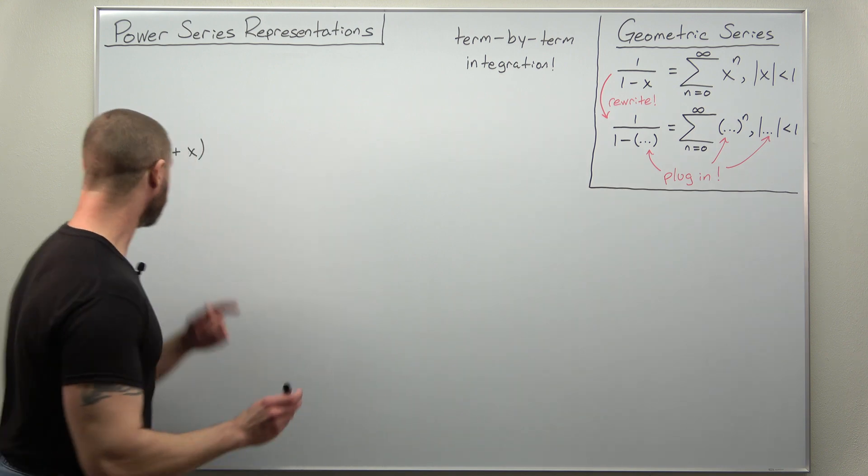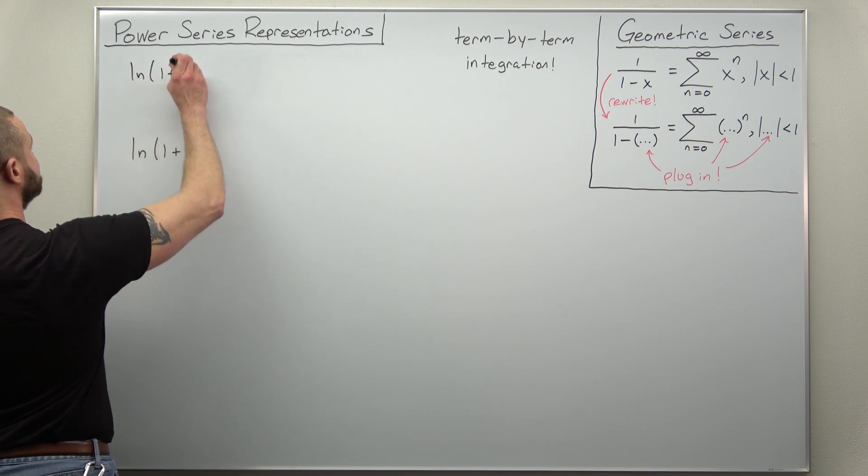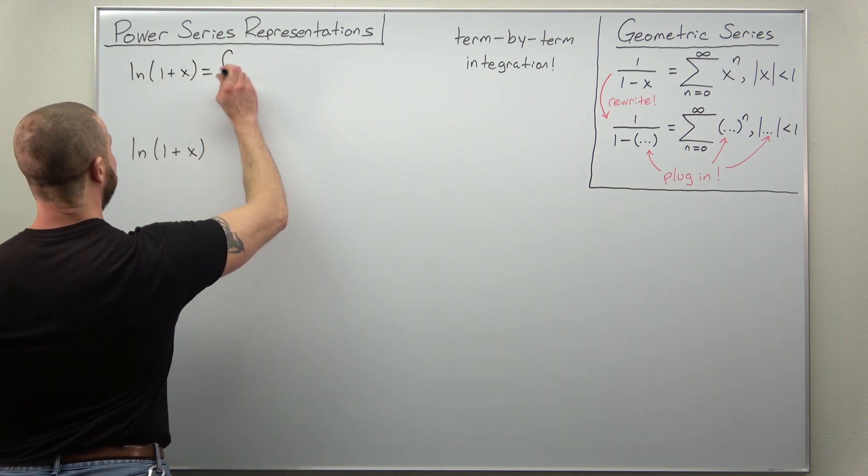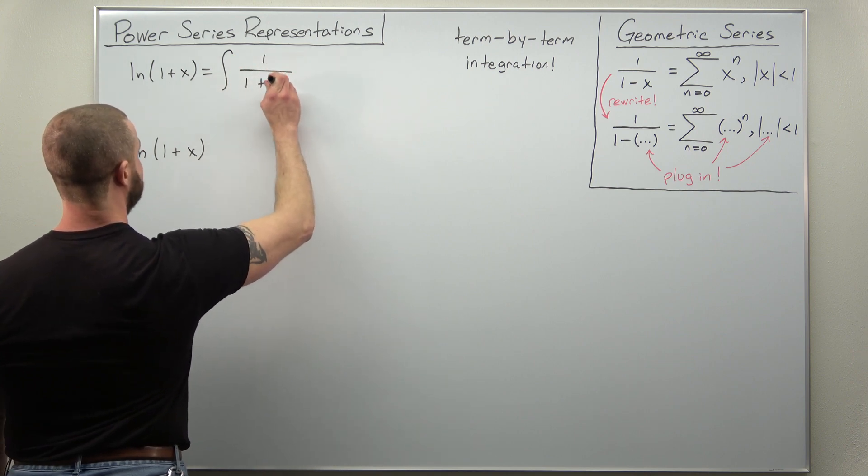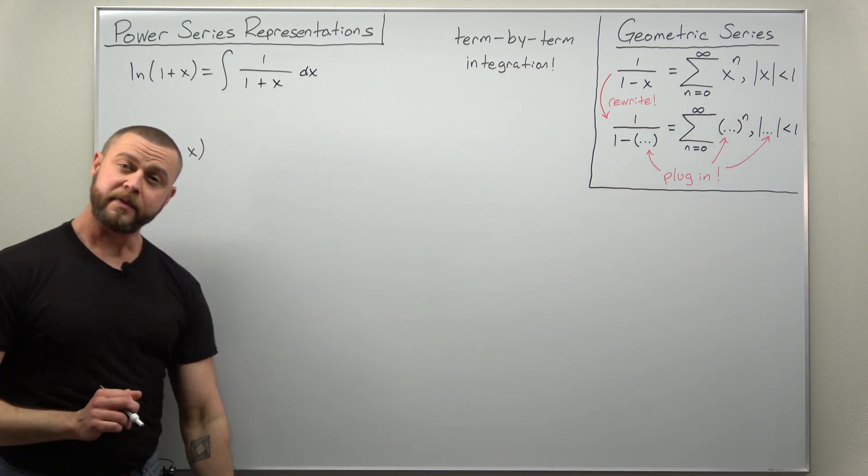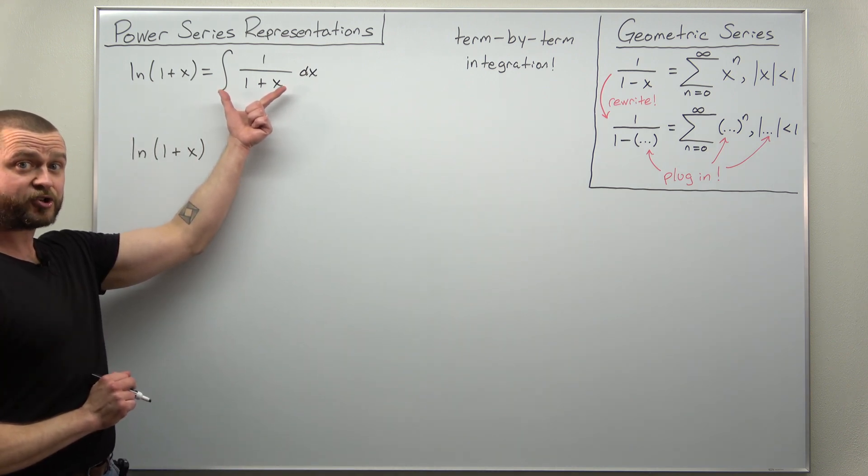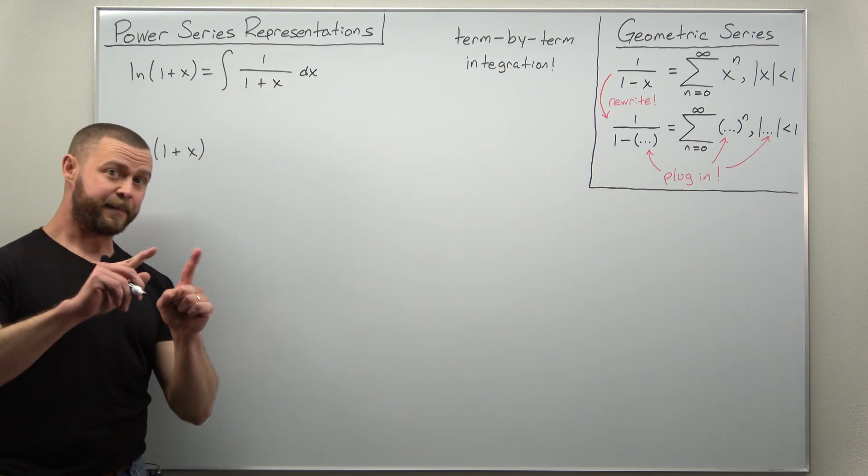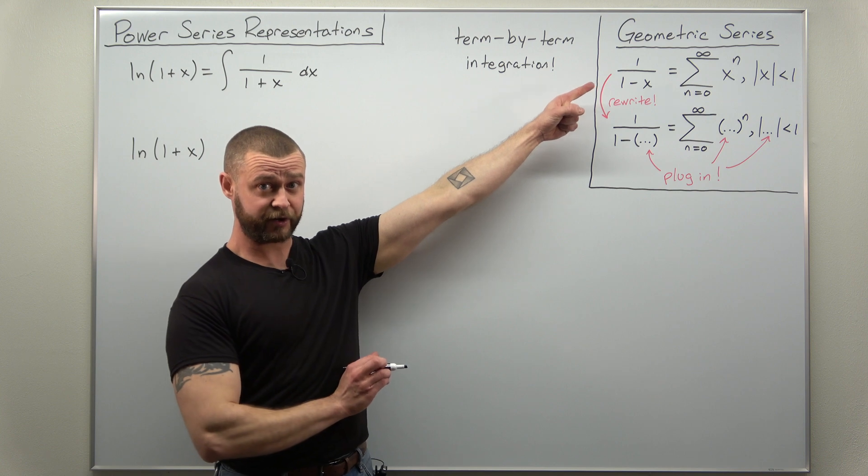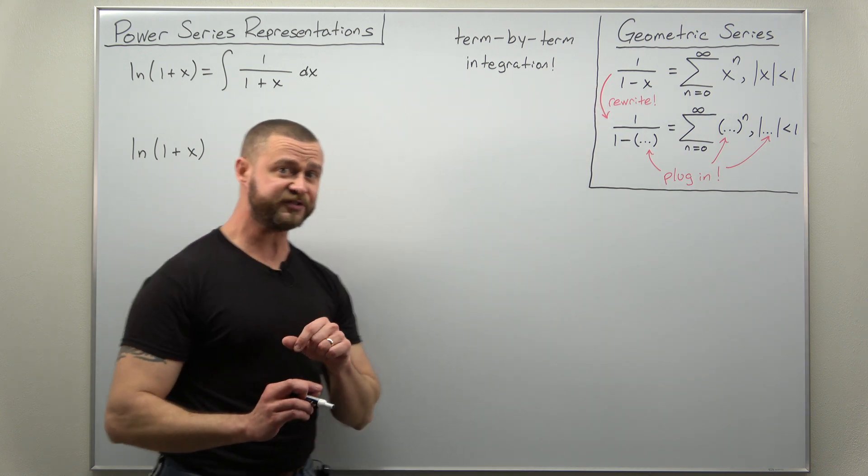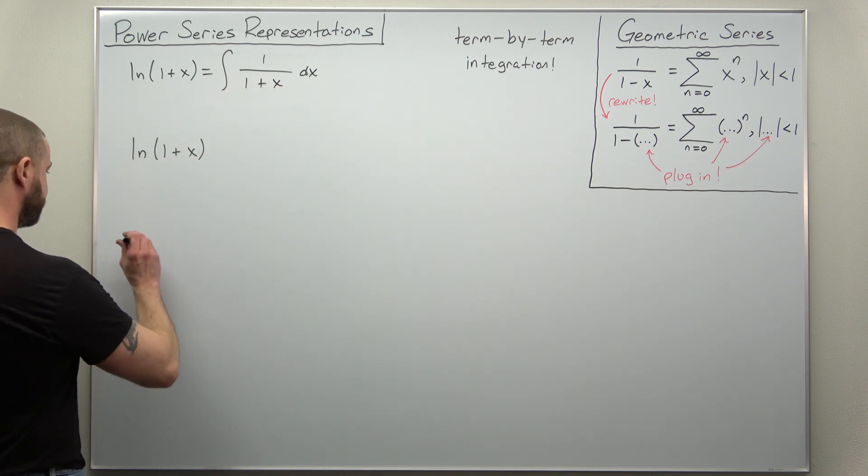Now we're going to start by recognizing that natural log of 1 plus x, that is the antiderivative of 1 divided by 1 plus x. And the important thing here is we can easily find a power series representation for 1 divided by 1 plus x using the result from the geometric series. So let's start with that. We're going to find a power series for this function that we're integrating.